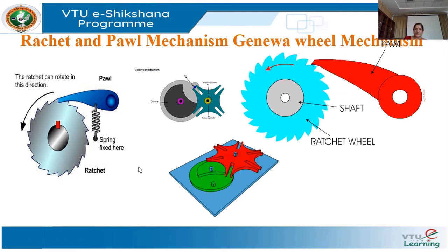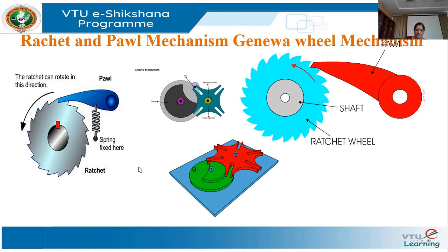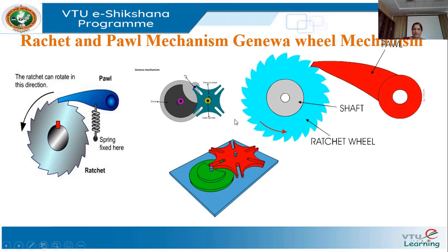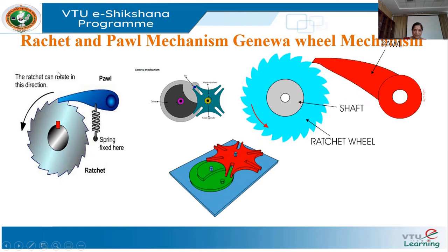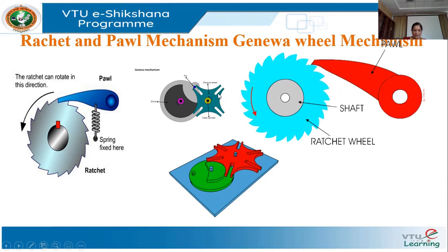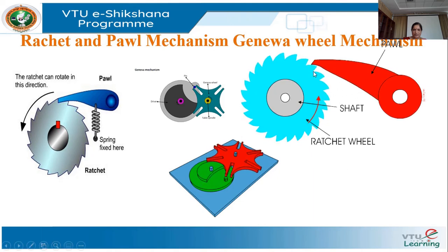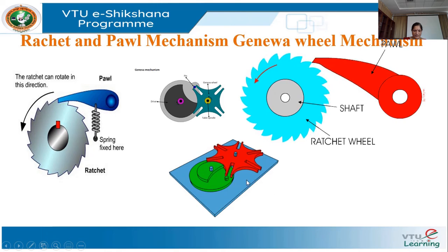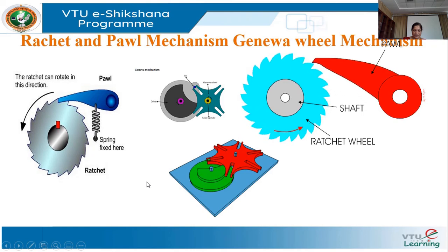Next I will discuss the ratchet and pawl mechanism. Both the ratchet and pawl mechanism and the Geneva wheel mechanism are called intermittent motion mechanisms. An intermittent motion mechanism is a linkage which converts continuous motion into intermittent motion. The ratchet and pawl mechanism is used to produce intermittent circular motion.